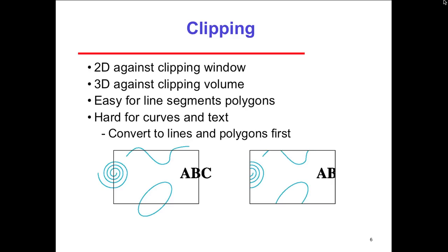We have clipping in 2D against the clipping window and 3D against the clipping volume. It's easy for line segments but hard for curves and text. An example of what clipping means: only showing what's inside the viewable area. Stuff outside doesn't have to be rendered — it doesn't exist because it's not shown. For text, we turned 'abc' into just 'ab'; for curves and lines we can't show the rest unless we make it smaller.